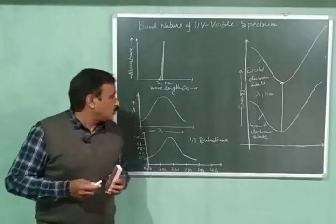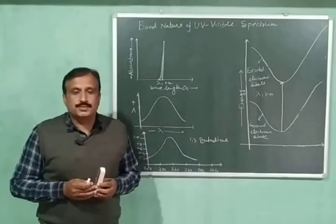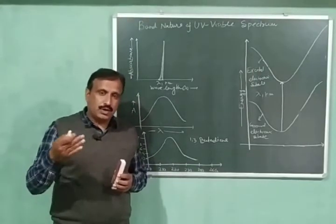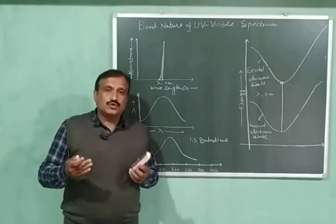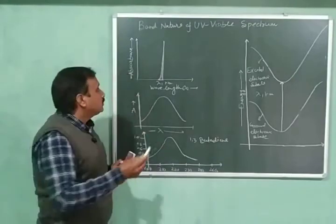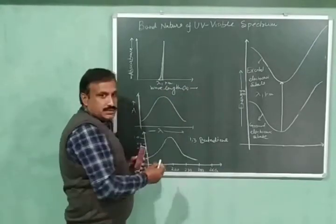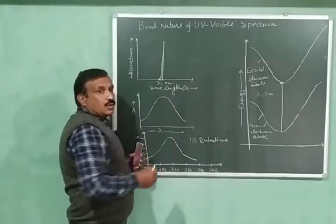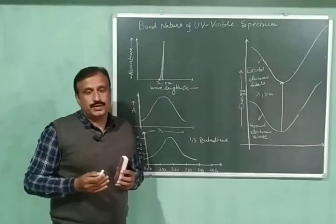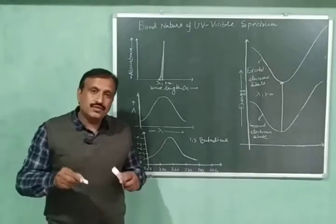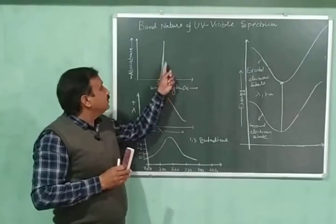The spectrum is a plot of absorbance versus wavelength. The number of peaks in the spectrum depends upon the number of electronic transitions possible within the molecules of the absorbing substance. In the spectrum, we don't observe sharp peaks — we observe broad peaks, which are called broad bands. This is the band nature of UV-Visible spectroscopy. In this video, I am going to explain why we have these broad peaks instead of sharp peaks.